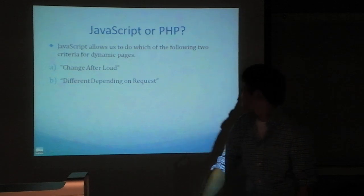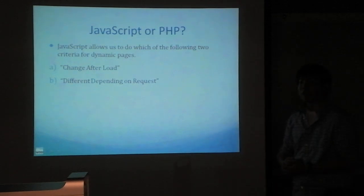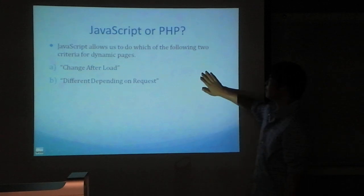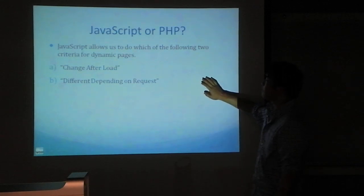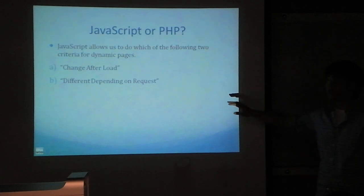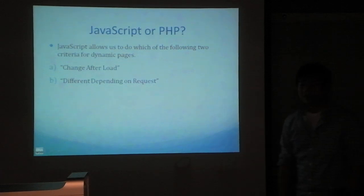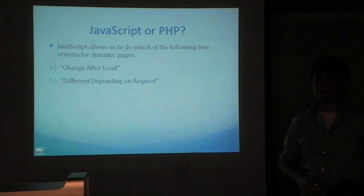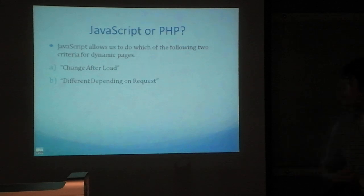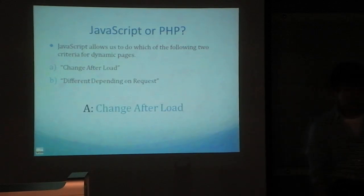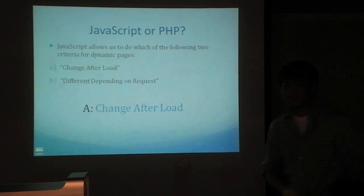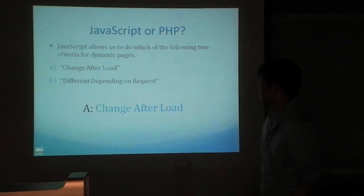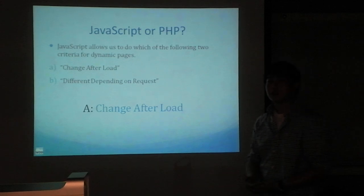Here's a question to figure out the difference between JavaScript and PHP: for dynamic pages, which of the following does JavaScript allow us to do? The answer is: change after load. That's the same examples we went through — the reason JavaScript doesn't serve different pages depending on requests is that the Amazon content was rendered in the background first, specialized on the server, and then shipped to the browser, so nothing changed after the browser loaded.